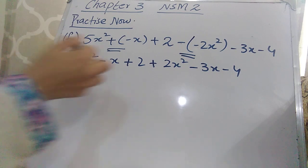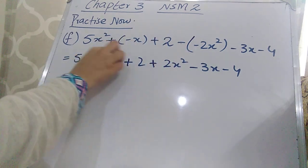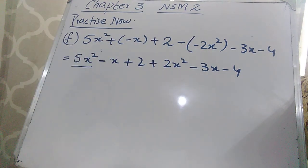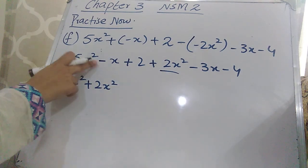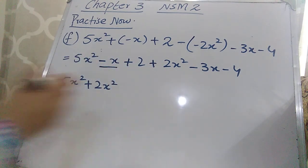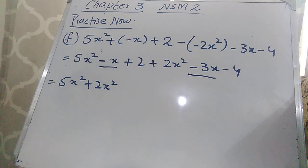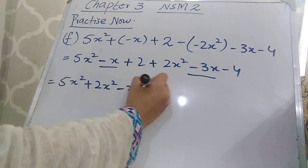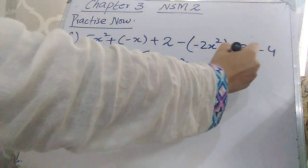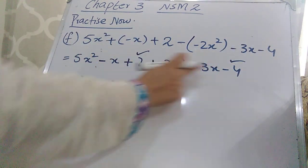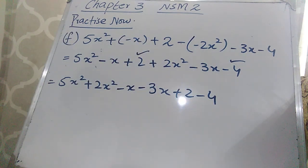Now group like terms together. The x² terms are 5x² and +2x², the x terms are −x and −3x, and the constants are +2 and −4. Write each group of like terms together, remembering to keep their signs: 5x² + 2x², then −x − 3x, then +2 − 4.